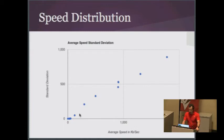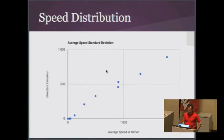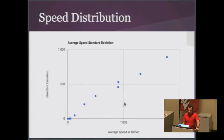We have four quadrants. What we're most interested in is the quadrant where the standard deviation is lower and the speed is slower — whatever drops into this quadrant is considered to be a heavy resource.